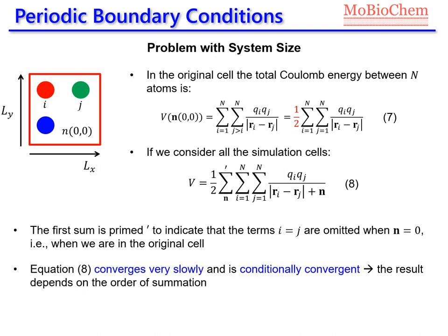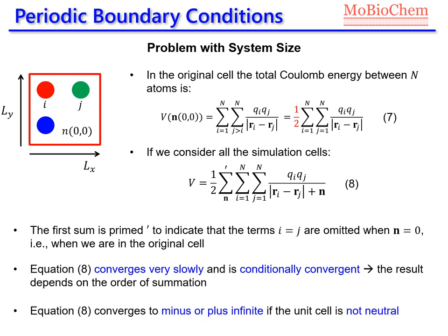Equation 8 converges very, very slowly and it is conditionally convergent. That means the result of the potential energy using equation 8 depends on the order we make the summation. An additional problem is that equation 8 converges to minus or plus infinity if the unit cell is not neutral.